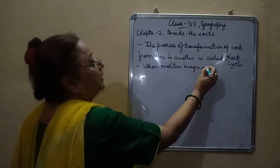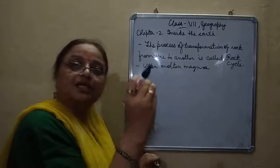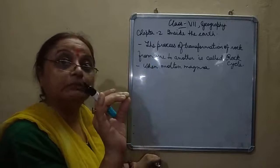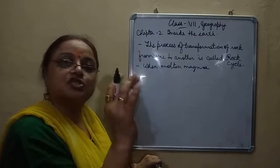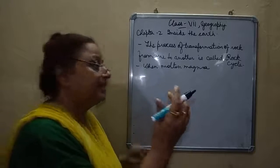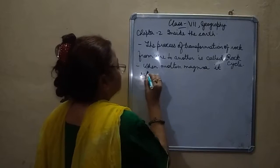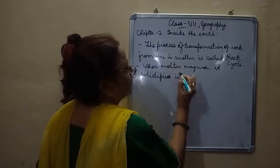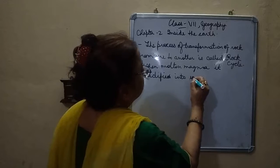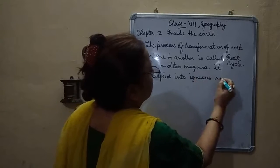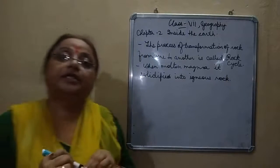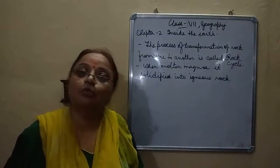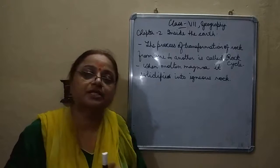Molten magma — this is the rock that is completely melted, in liquid form — that is called magma. It solidifies into igneous rock. These igneous rocks are broken down into small particles that are transported and deposited to form sedimentary rocks.